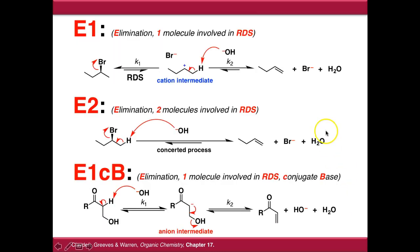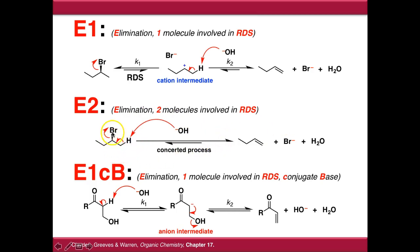To summarise: E1 is directly analogous to SN1, involving formation of a carbocation intermediate from loss of a leaving group as the rate determining step, followed by deprotonation using a base to push electron density from the C-H bond onto the cation, giving the unsaturated product. E2 is directly analogous to SN2 — a concerted single-step process in which the C-H bond and the C-leaving group bond must be anti-periplanar for the reaction to occur. E1CB proceeds via deprotonation first to give an anionic intermediate, followed by elimination, and is capable of eliminating even poor leaving groups like hydroxide.